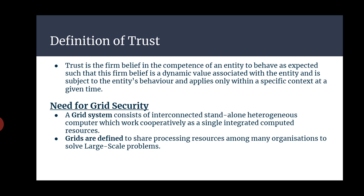These two parameters — security demand and trust index — must satisfy a security assurance condition: trust index is greater than or equal to security demand. During the job mapping process, users care about typical attributes whose values are dynamically changing, depending heavily on the trust model, security policies, accumulated reputation, self-defense capability, attack history, and site vulnerability.